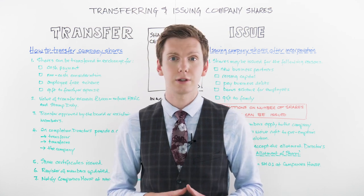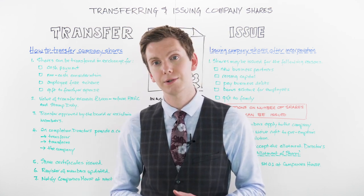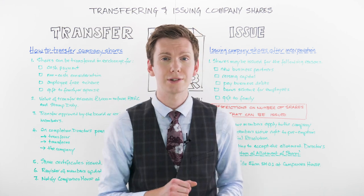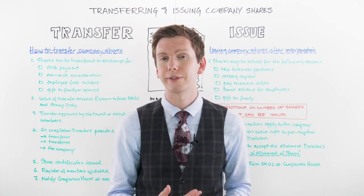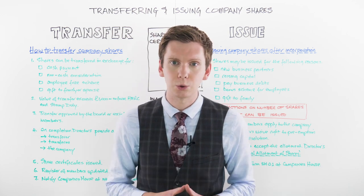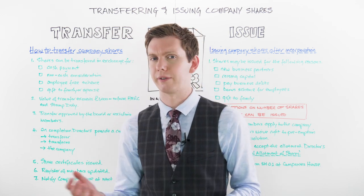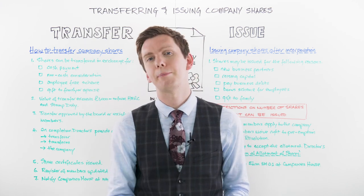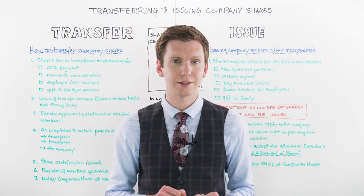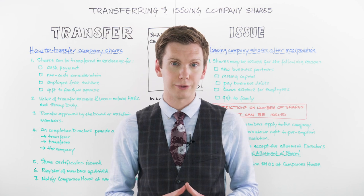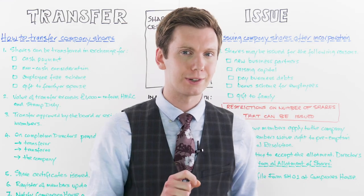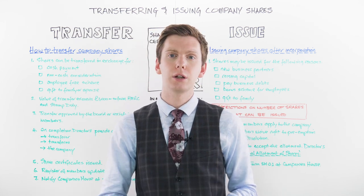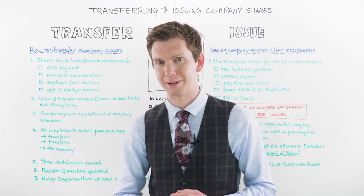Once the allotment has taken place, the directors should submit the SH01 form to Companies House. This form will include the company name and registration number, the date the allotment took place, the name, class, currency and nominal value of each share, the amount paid or unpaid for those shares, details of any non-cash payments where applicable, a statement of capital, the prescribed particulars — that's the rights attached to those shares — and the signature of the director. Directors are legally responsible for filing the SH01 form at Companies House no later than one month after the allotment has been completed.